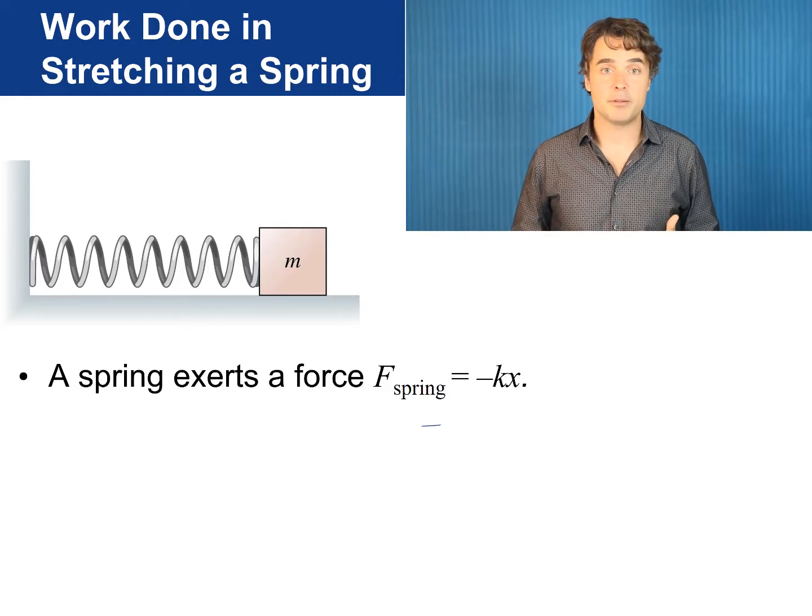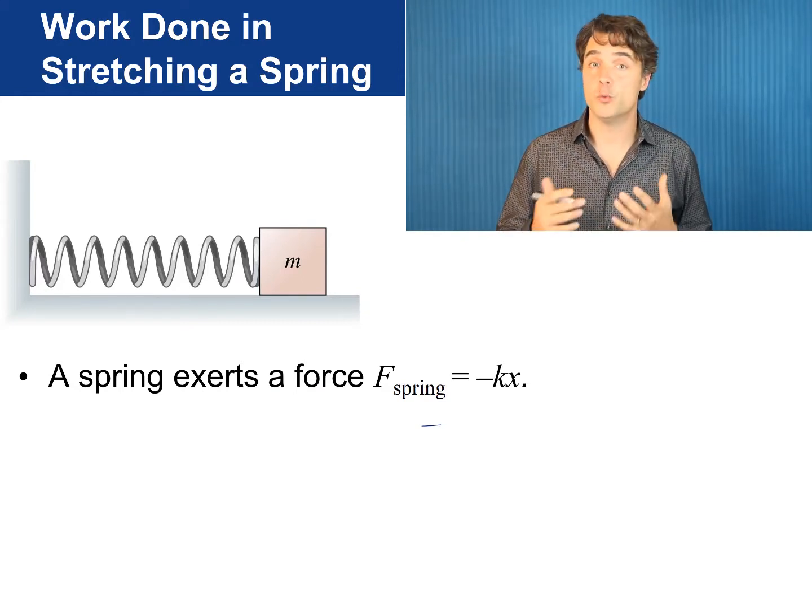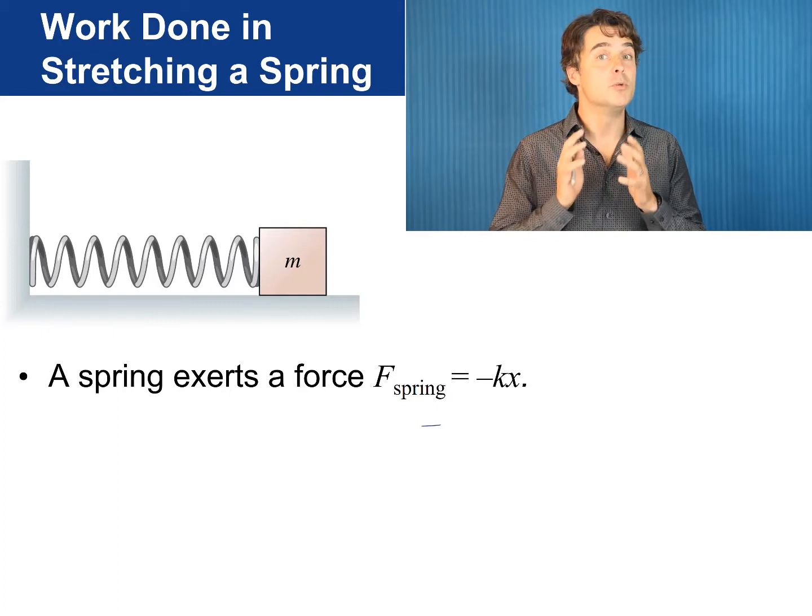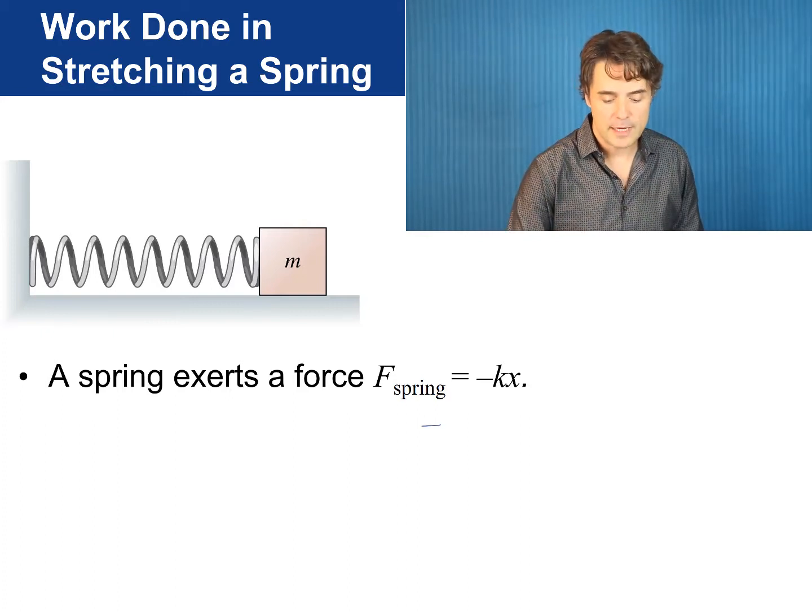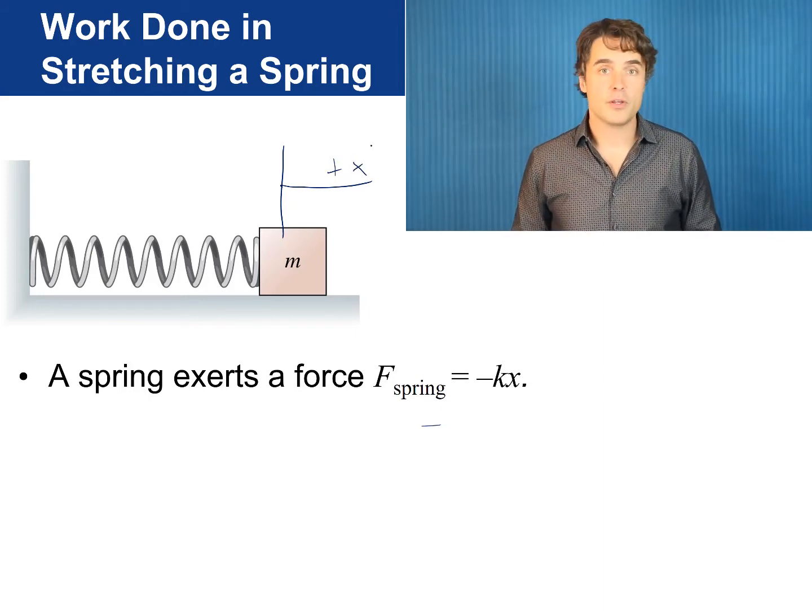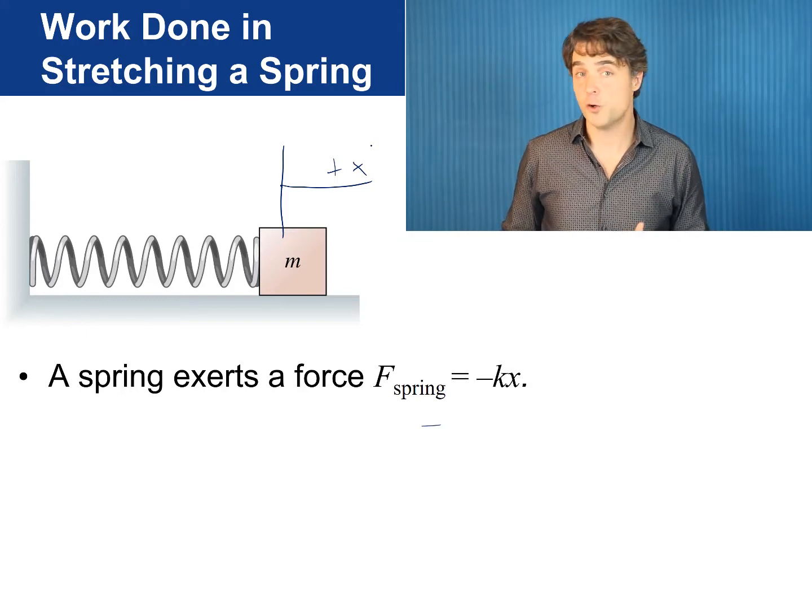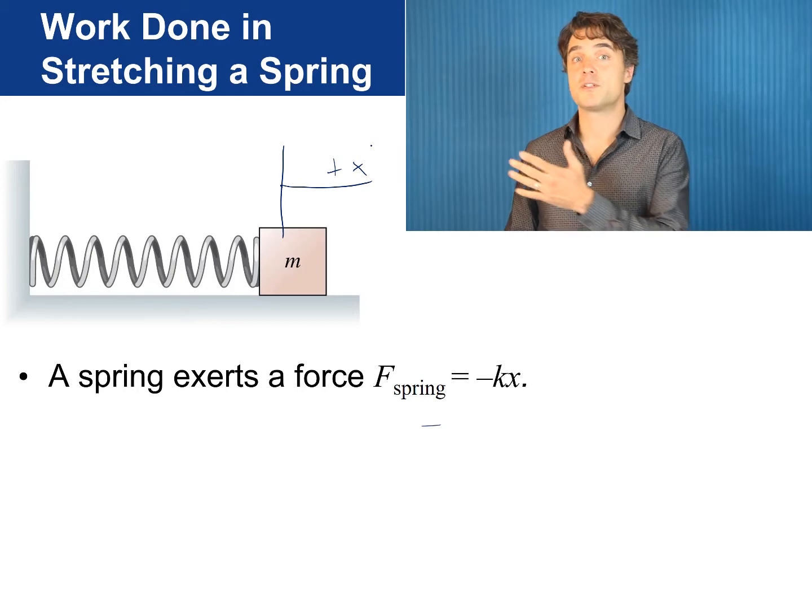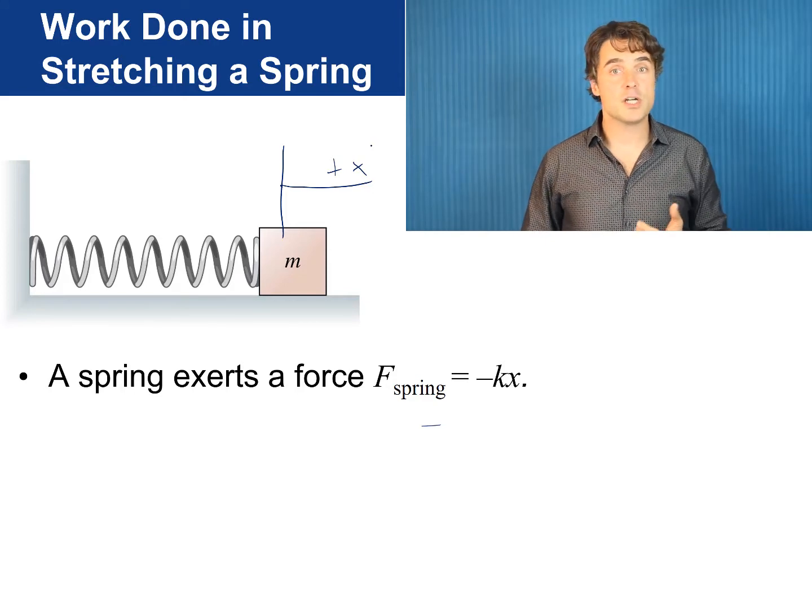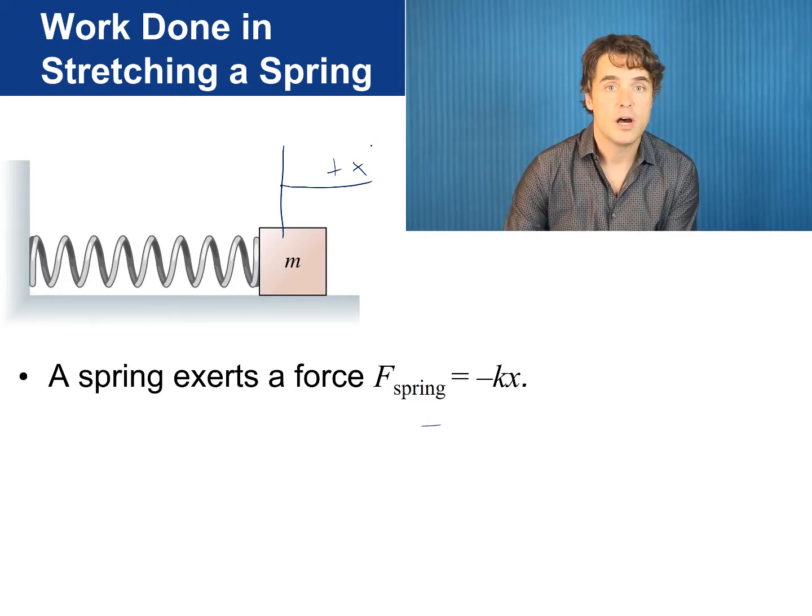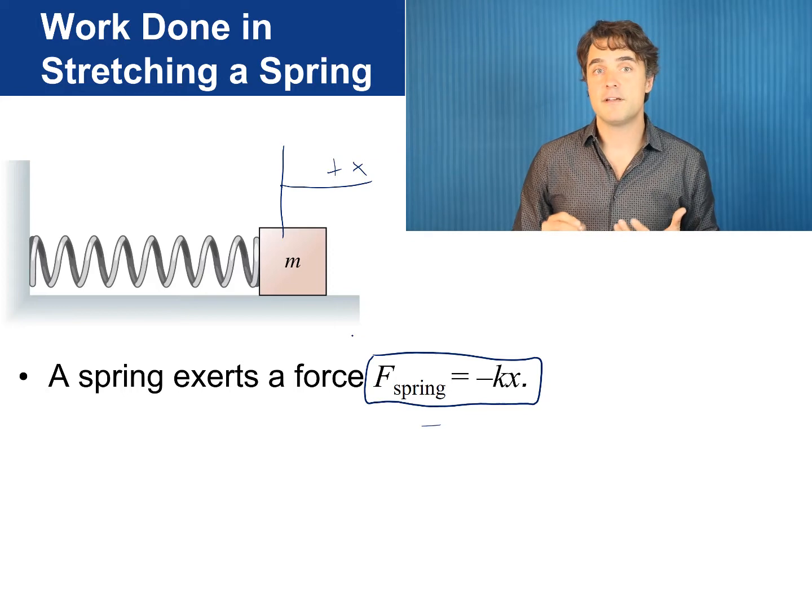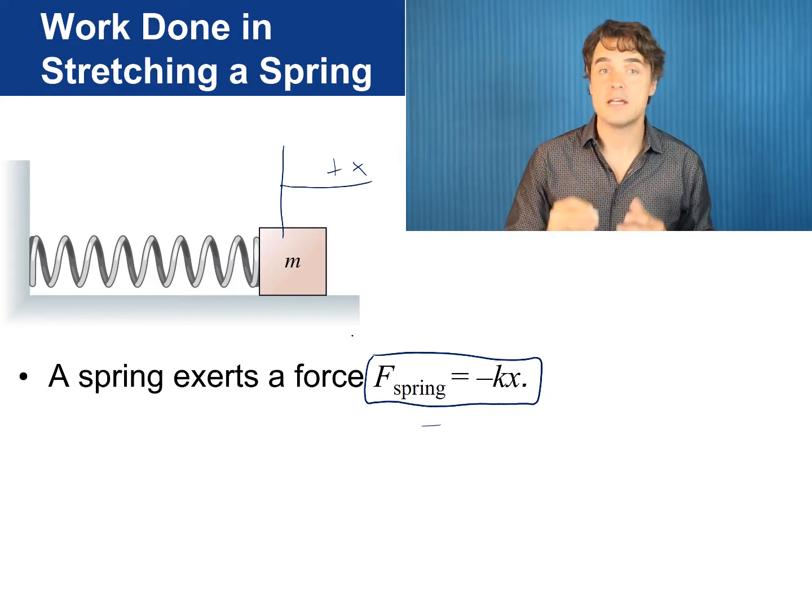Okay let's do an example of integrating a variable force to get work. Consider a spring which is attached to a wall at the left end and a movable mass on the right end. We define x to be the position of the mass with x equals zero being the point where the spring is in equilibrium so there's no force on the mass. If the mass moves to the left x is negative and if it moves to the right x is positive. And if the spring is not stretched too much we know that the force it exerts on the mass is given by Hooke's law.